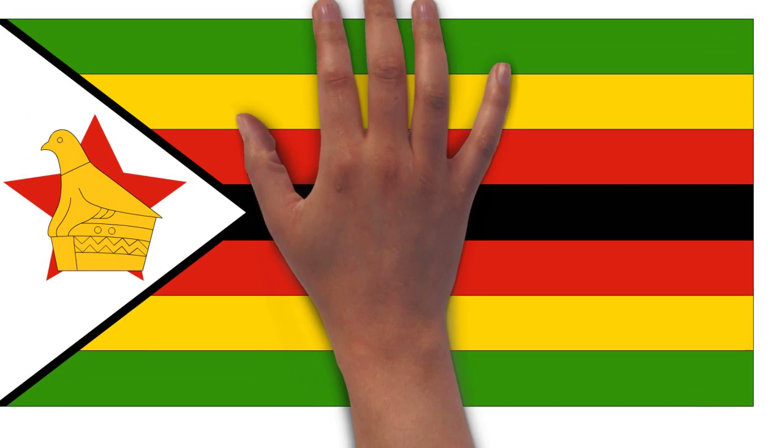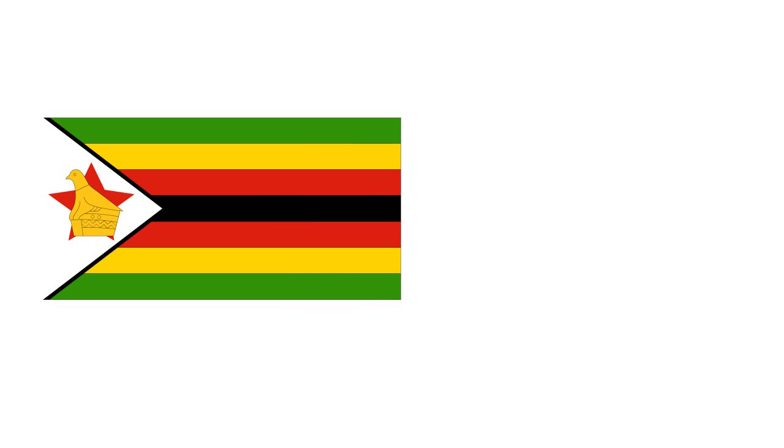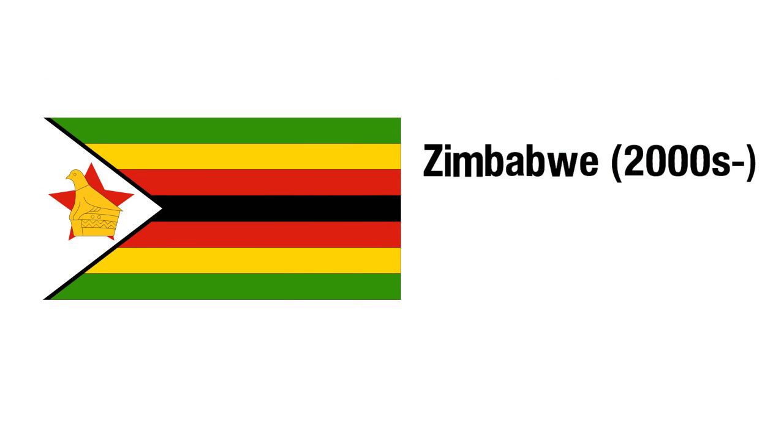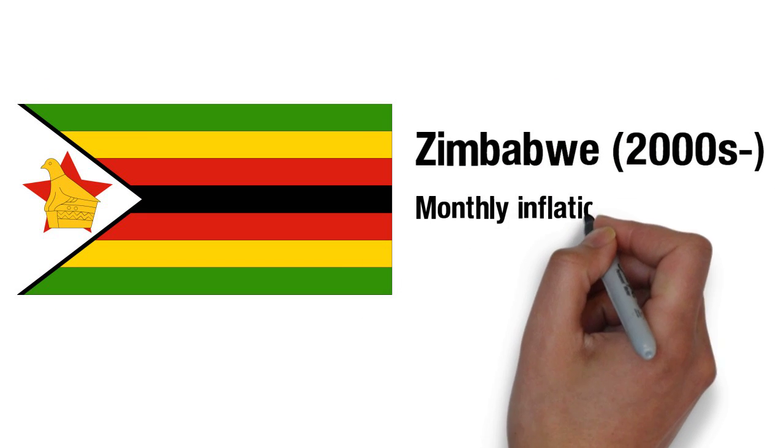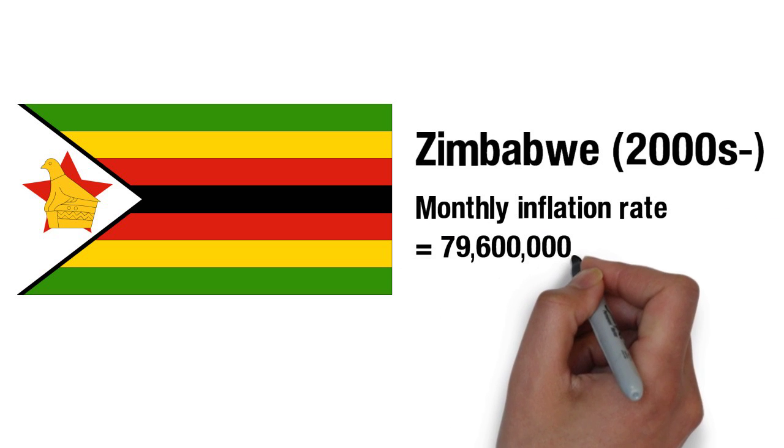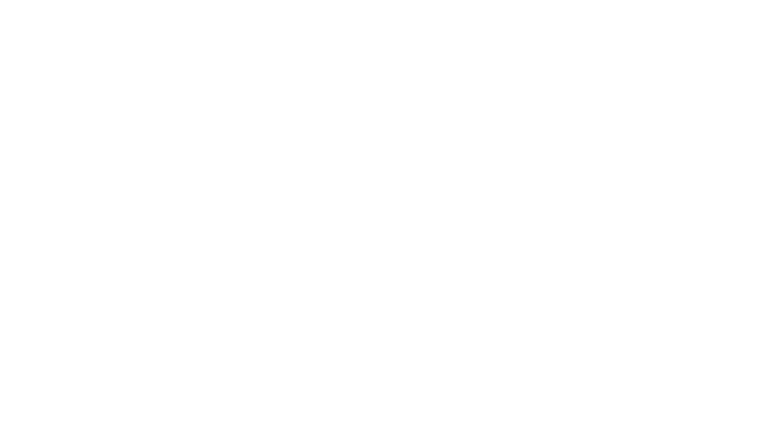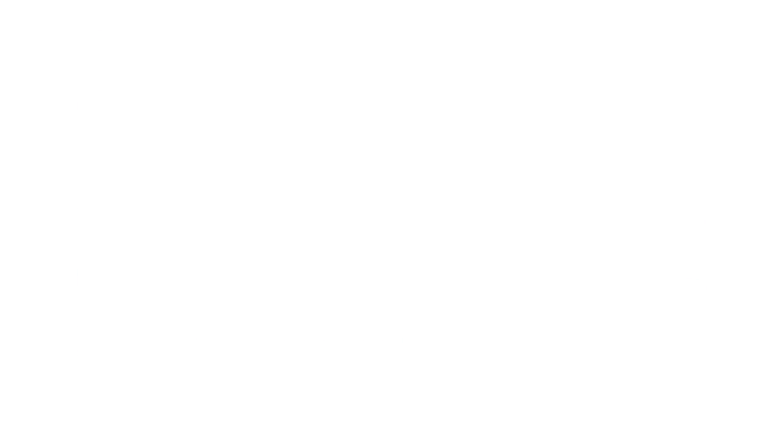A more recent example is that of Zimbabwe in southern Africa where in November 2008 the monthly inflation rate was a staggering 79.6 billion percent where one US dollar was worth 2.6 billion Zimbabwe dollars.